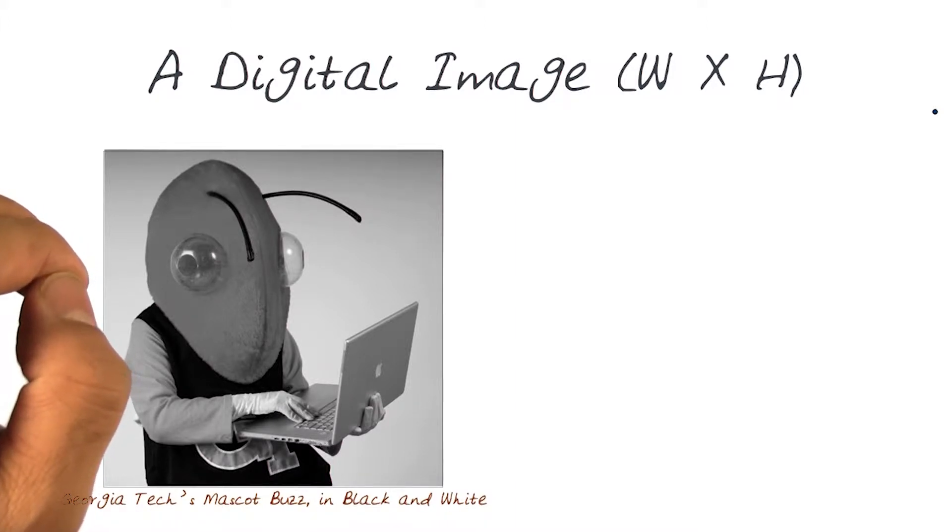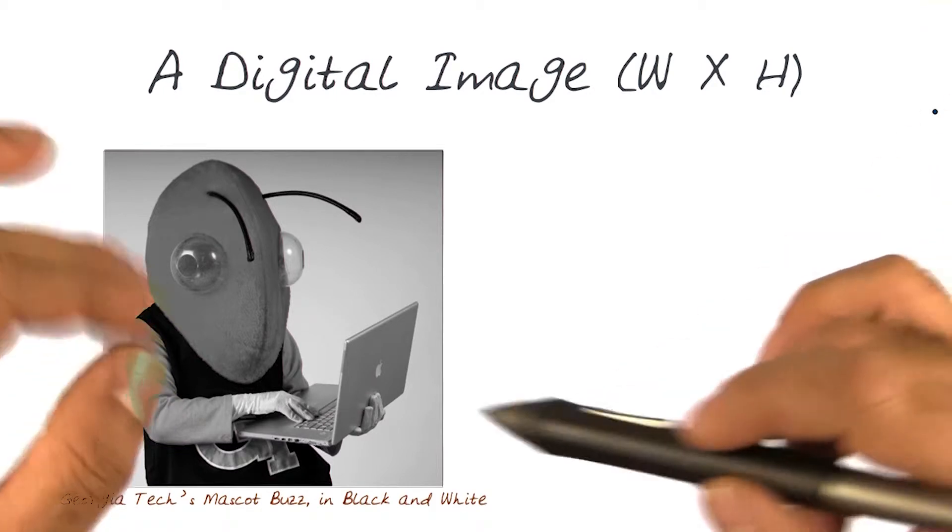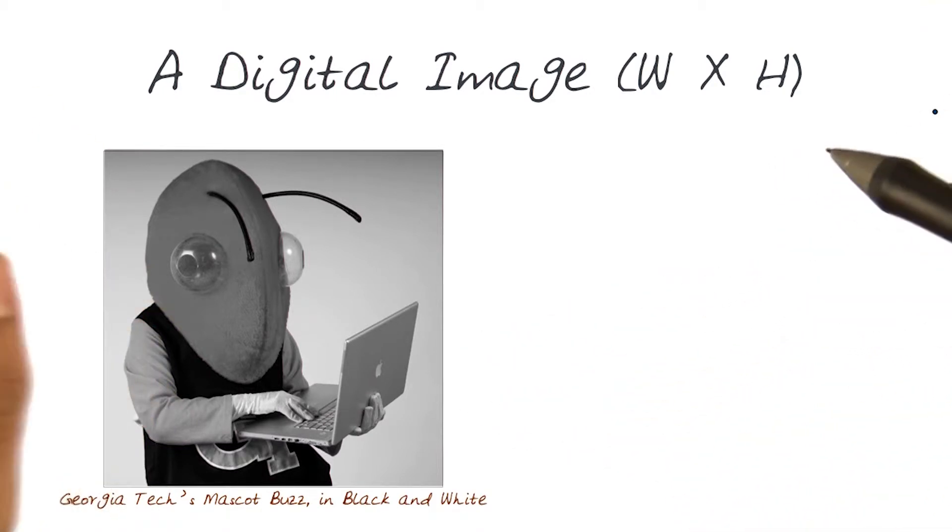Basically, the range from a white pixel, or a white color, to a black color. And this is now showing a black and white, or a grayscale image.